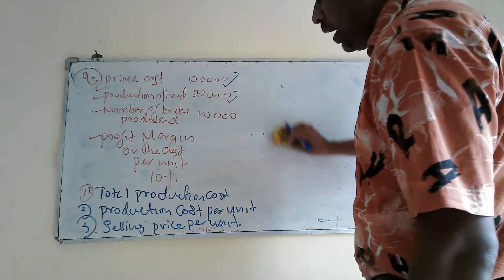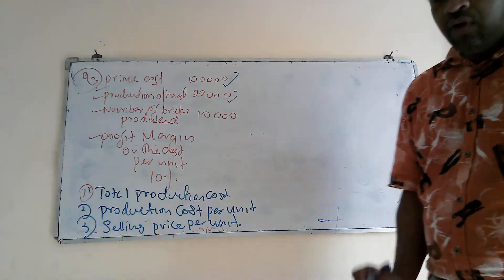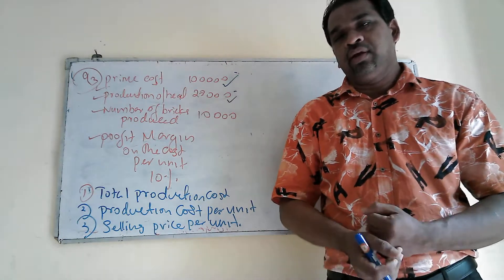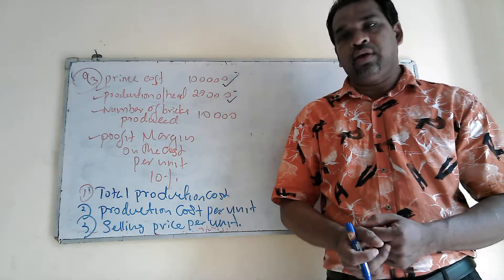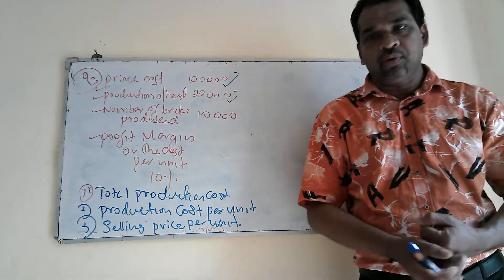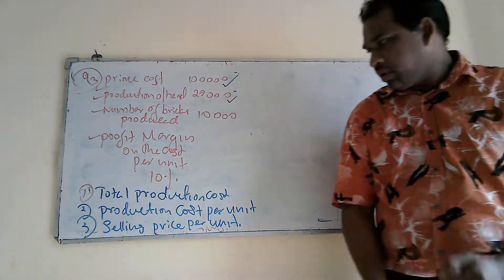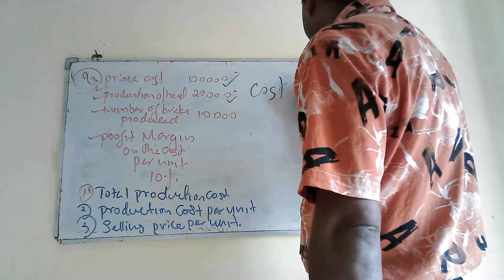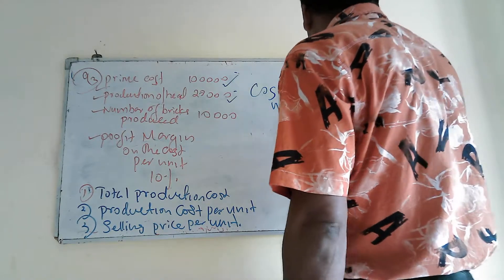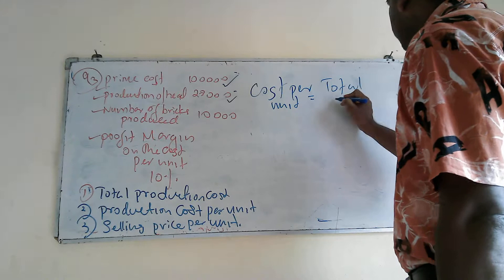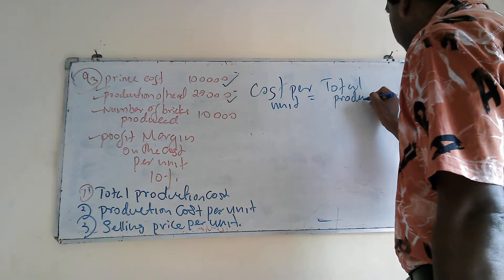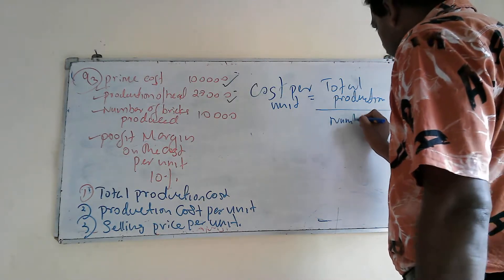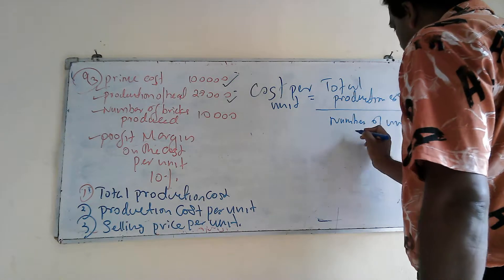Now we are going to calculate Part B: production cost per unit. If you know the total cost of production and the number of units produced during the period, you can easily calculate the cost per unit. The formula is: cost per unit equals total production cost divided by number of units produced.